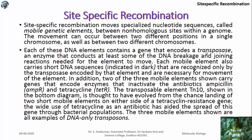The movement can occur between two different positions in a single chromosome as well as between two different chromosomes. Each of these DNA elements contains a gene that encodes a transposase, an enzyme that conducts the DNA breakage and joining reactions needed for the element to move. Each mobile element also carries short DNA sequences recognized only by the transposase encoded by that element, which are necessary for the movement of the element.